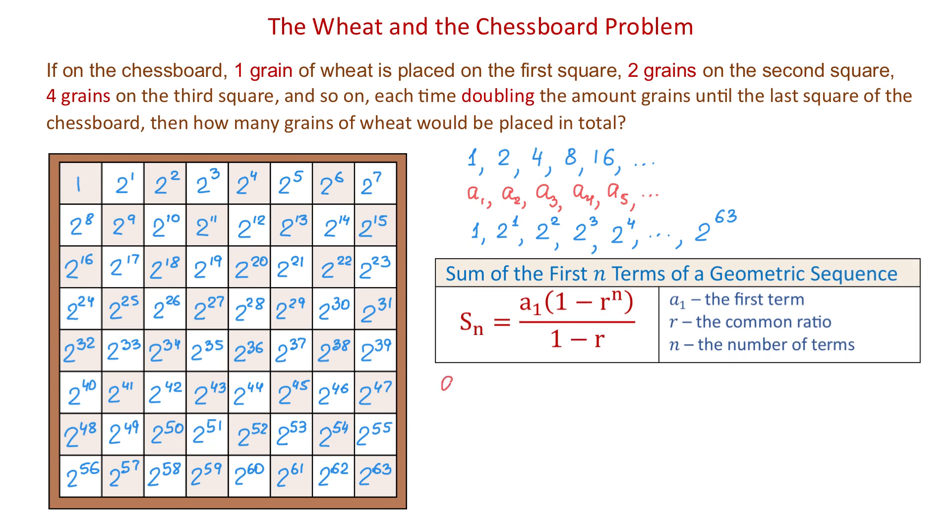In our problem, the first term is 1. The common ratio r equals 2, because this is the number we multiply by to get the next term, and n equals 64.